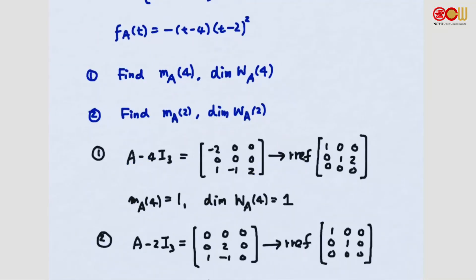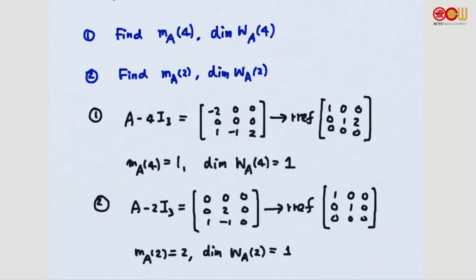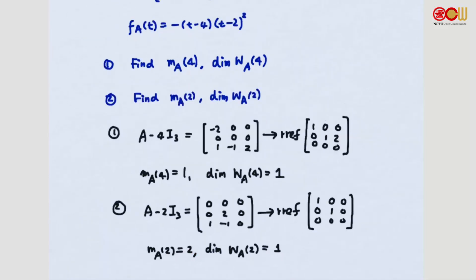Now let's consider eigenvalue 2. We form the matrix A minus 2 times the identity, apply Gaussian elimination to find the RREF, and see that this matrix has rank equal to 2. So the dimension of the null space — that is, the dimension of the eigenspace for lambda equals 2 — is also 1. But by looking at the characteristic polynomial, m_A(2) equals 2.